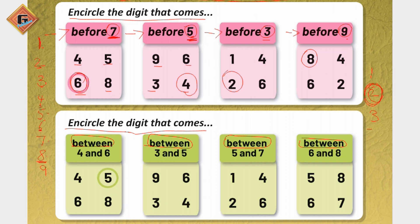One is done for you. Here it is written: four dash six, meaning between four and six comes five — five is done for you. Now moving ahead, between three and five: count — one, two, three, four, five — between three and five comes number four, so we will encircle number four like this.